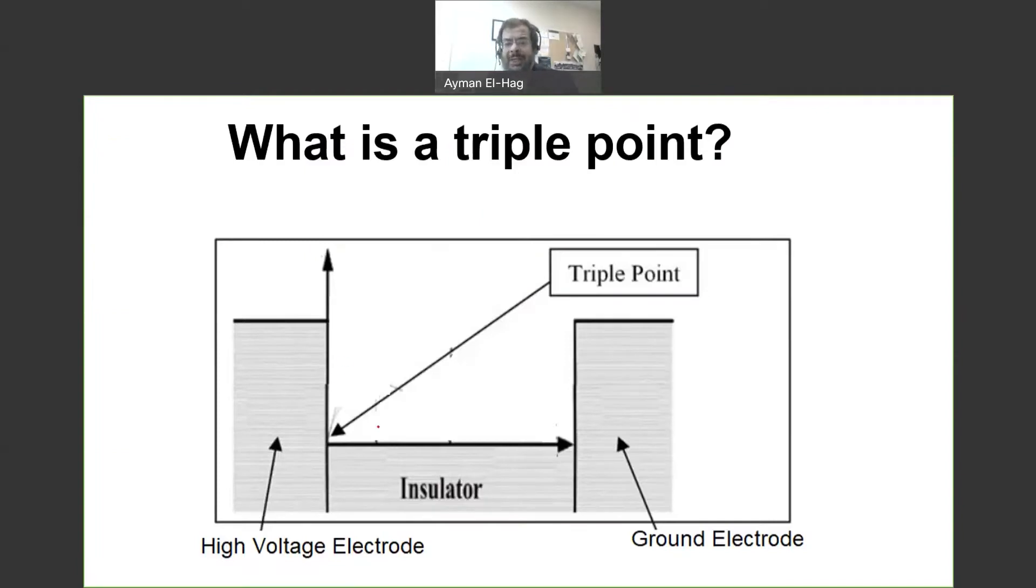Basically, a triple point is a point between three different materials, and each material will have a different dielectric constant. So, for example, here, this is a triple point where we have air, and as we know, air has a dielectric constant equal to 1. Insulated material, where epsilon r here can be between 2 to 5. And here we have a metal where we will have a very high dielectric constant. You can assume it going to infinity.